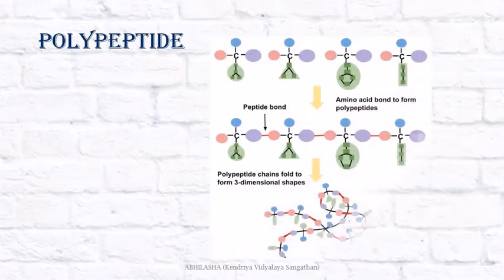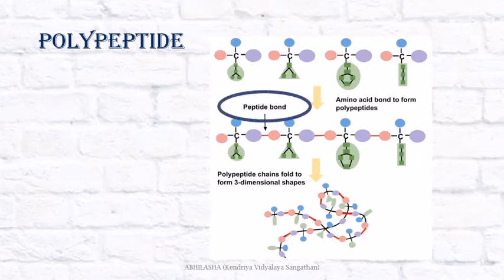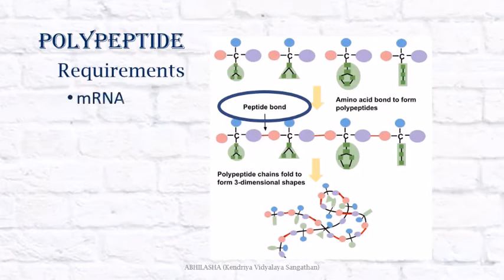Polypeptides are formed by amino acids, which are joined by bonds known as peptide bonds. Peptide bond formation requires the messenger RNA, which tells the sequence in which the amino acids will have to be added.